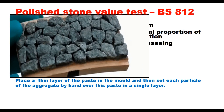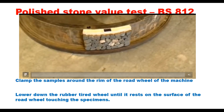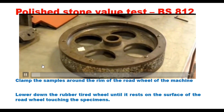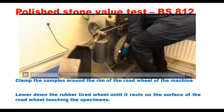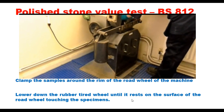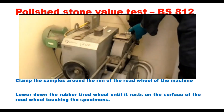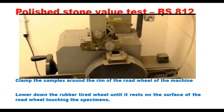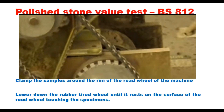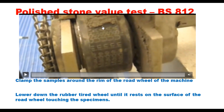Fourteen such specimens are prepared, cured, and clamped around the rim of the road wheel of the machine. Each of the 14 samples is placed around the rim, fitted in the machine, and the rubber tire wheel is lowered until it rests on the surface of the road wheel touching the specimen. A load of about 40 kg is applied through a lever, the machine is rotated at 300 to 320 rpm, and a continuous supply of sand and water is made at the interface of the two wheels.